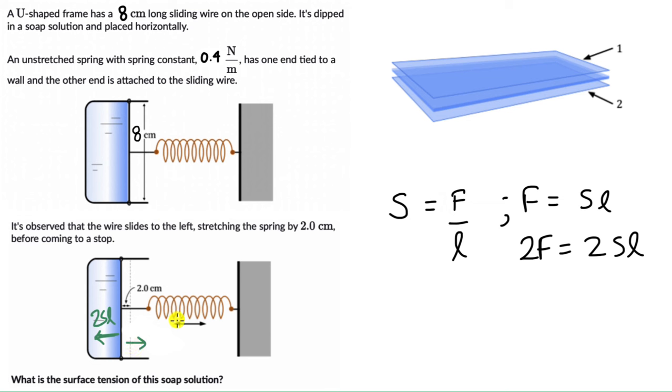We know that the force that the spring exerts is KX, Hooke's law. We know K, which is 0.4 N per meter, that is the spring constant. And X is the extension, 2 centimeters. So when we balance this, 2SL equals KX.